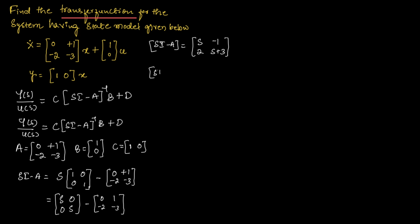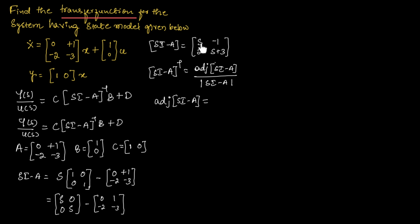Now let us find (SI minus A) inverse. We use the standard formula: adjoint of (SI minus A) divided by determinant of (SI minus A). To find the adjoint of this matrix, we swap the diagonal elements — replacing S with S+3 and S+3 with S — and multiply the off-diagonal elements by minus 1. So the adjoint of SI minus A is [S+3, 1; -2, S].